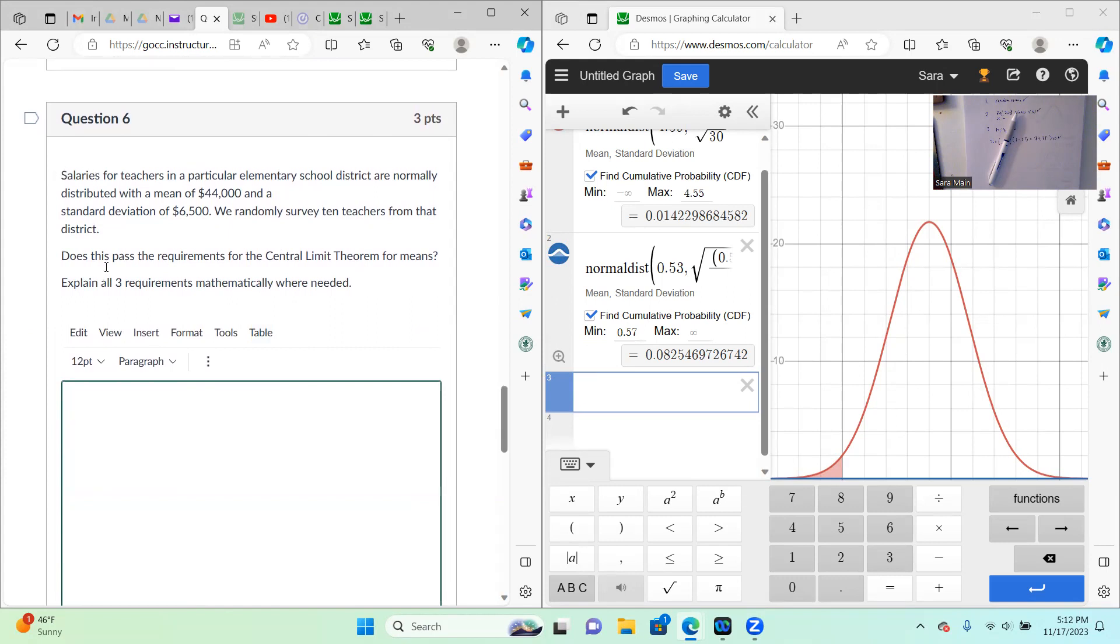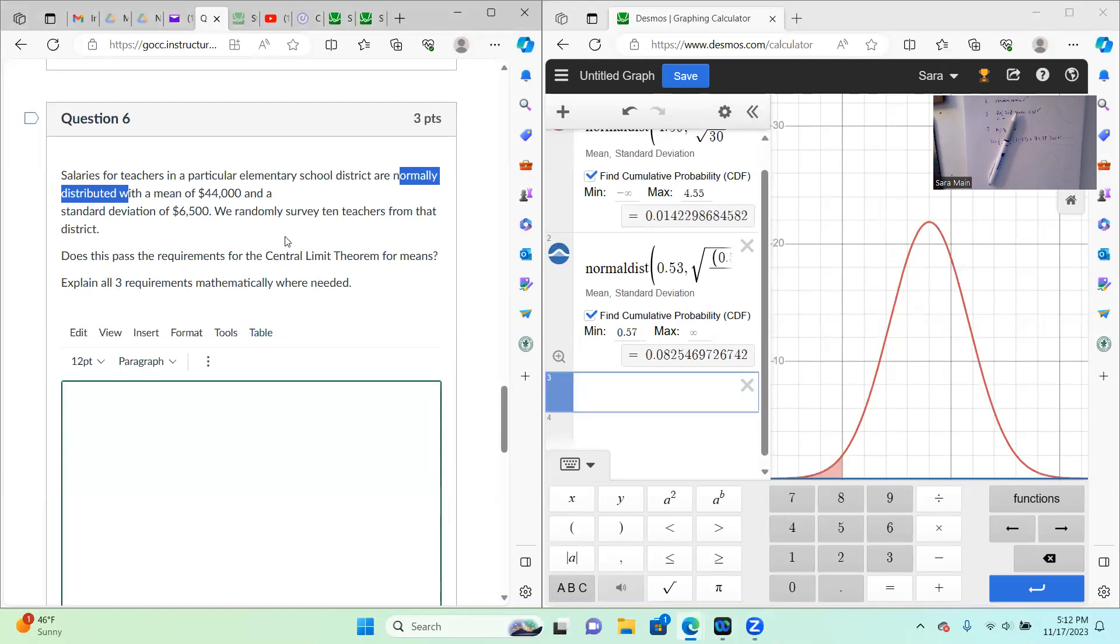Then number six has me prove my central limit theorem. The big thing here, I'm not going to go through them all, but the big thing here is that I told you that it's normally distributed. So it's okay that the sample size is not bigger than 30. So that's one thing to know there. The sample size was 10.